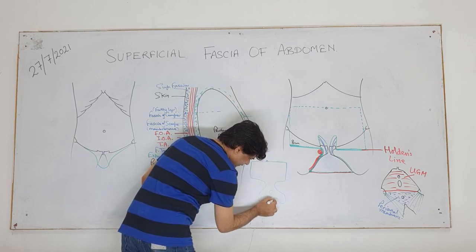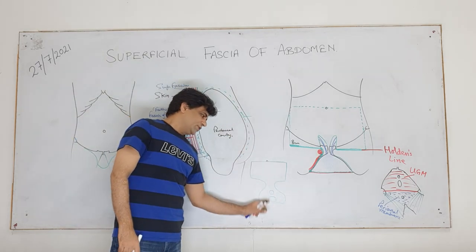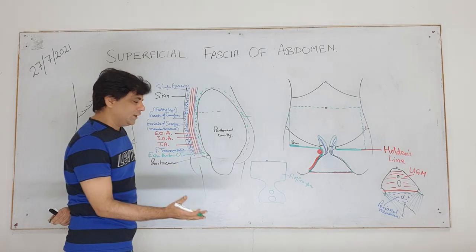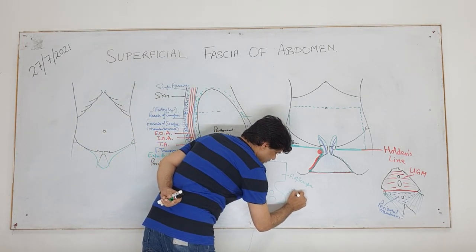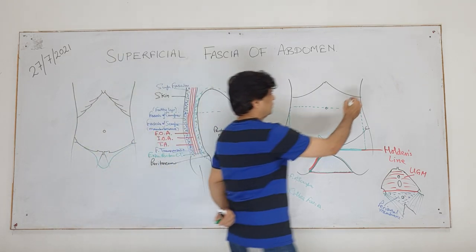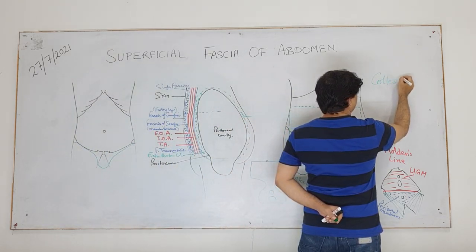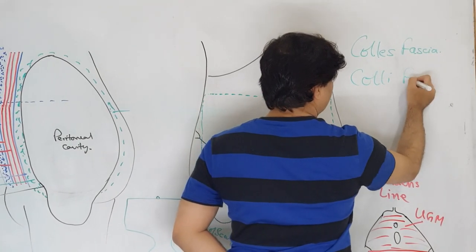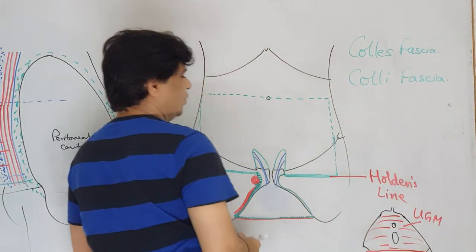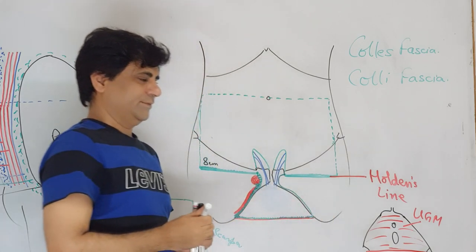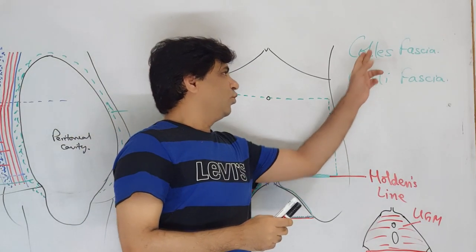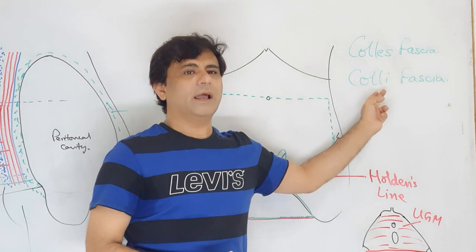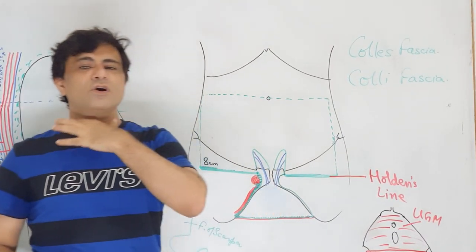This fascia of Scarpa when it continues into the perineum, the same thing is called Colles' fascia. Remember there are two words: Colles' fascia. And then there is Colli fascia - or fascia of Colli - which is the deep fascia of the neck.